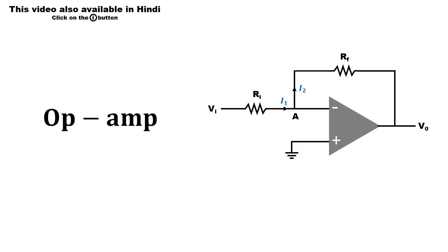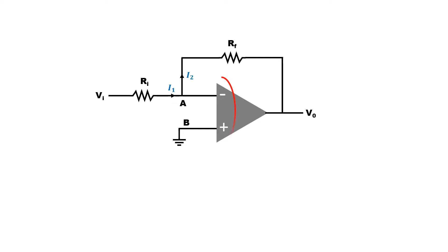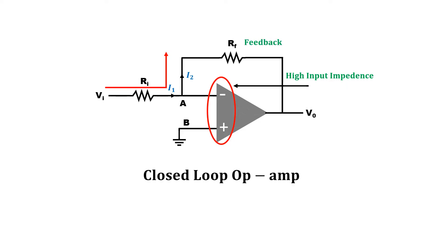First, let us know a brief information about the operational amplifier. The operational amplifier has a total of 8 terminals, of which only 3 terminals are displayed here. The terminal with the negative symbol is called the inverting terminal, because the applied voltage on this terminal is inverted by 180 degrees at the output. The terminal with the positive symbol is called the non-inverting terminal, because the applied voltage on this terminal appears without inversion at the output. The third terminal is the output terminal. The input impedance of the operational amplifier is very high, so current flows through the feedback resistance RF rather than through its inverting terminal. This resistance is called feedback resistance, and in its presence, the operational amplifier is called a closed-loop operational amplifier.